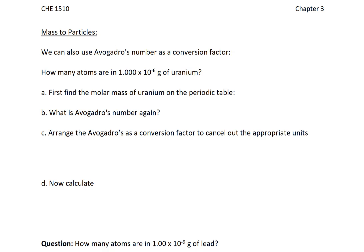Welcome back, students, to our Chemistry 1510 video notes. We're going to pick up where we left off in our Chapter 3, the Mole and Simple Mole Calculations Packet. So we're going to work on going between mass and particles here. And in this case, we're going to need to use Avogadro's number as a conversion factor. So here's the question we're going to work on. So the question is, how many atoms are in 1.000 times 10 to the negative 6 grams of uranium?